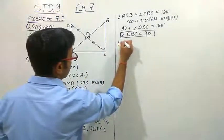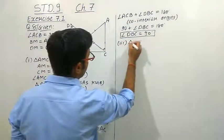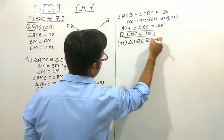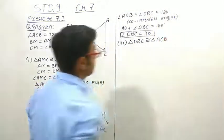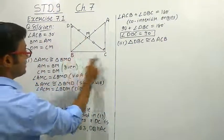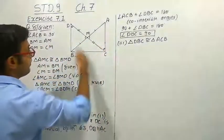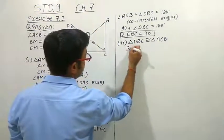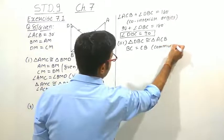Now the third thing we have to prove is that triangle DBC is congruent to triangle ACB. Consider these two triangles — DBC and ACB. BC side is common to both triangles, so BC equals CB.